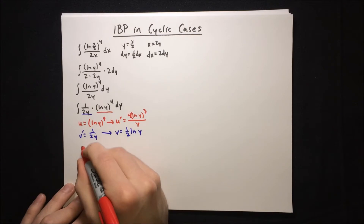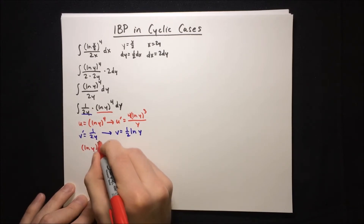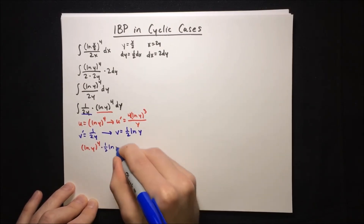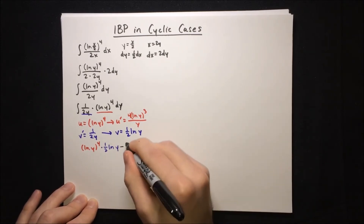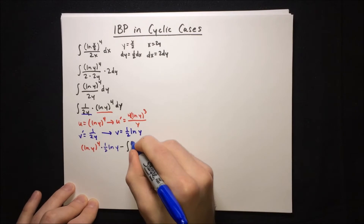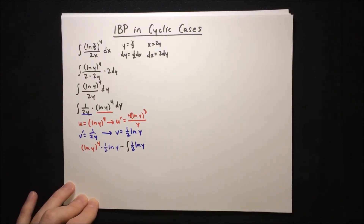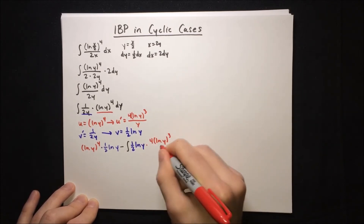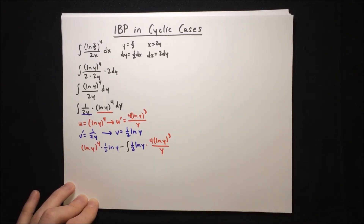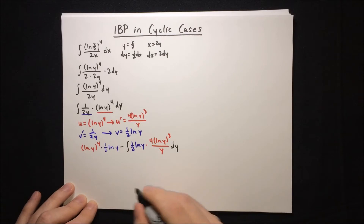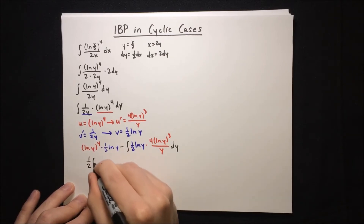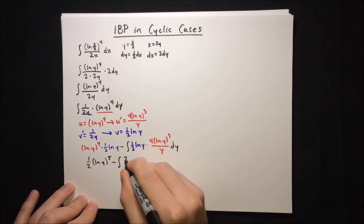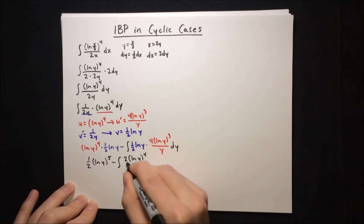Using integration by parts, we write the integral as u times v — that's ln(y^4) times half ln(y) — minus the integral of v times u prime, which is half ln(y) times 4 ln(y^3) over y, all dy. Simplifying, this is half ln(y^5) minus the integral of 2 ln(y^4) over y dy.